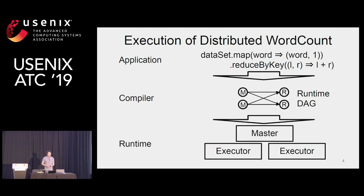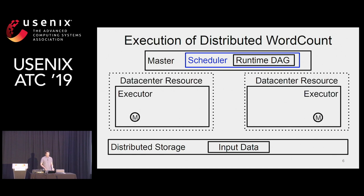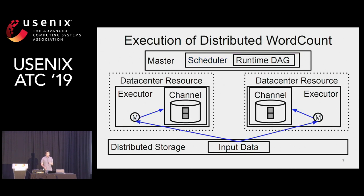This DAG will be executed by a distributed runtime with the master and executor processes. The master has a scheduler with the runtime DAG to schedule. It acquires the data center resources, deploys executor processes, and distributes the map vertices first. These map vertices will process their portions of data and output the data partitions to a data channel abstraction — in this case, disks. And the reduce vertices will be scheduled next, and they will fetch the partitions, effectively shuffling the data.